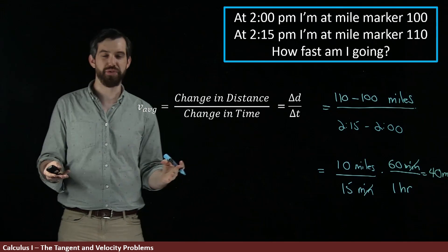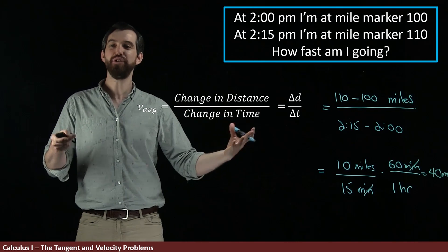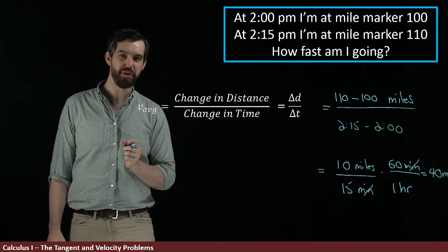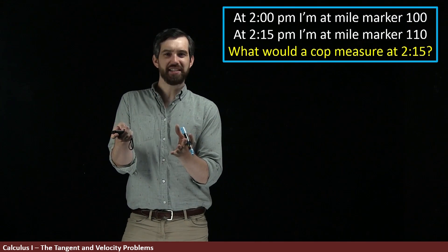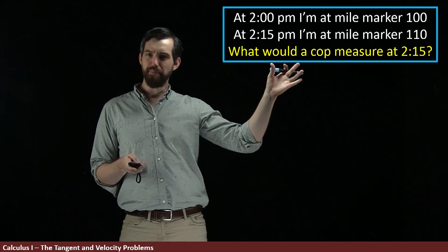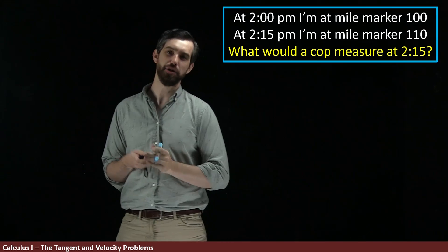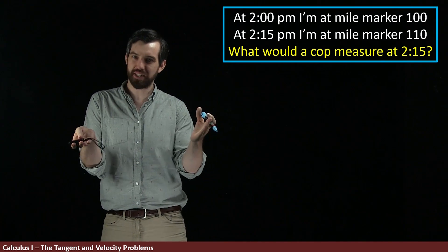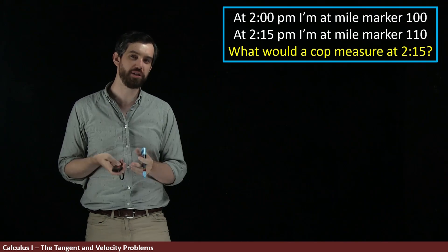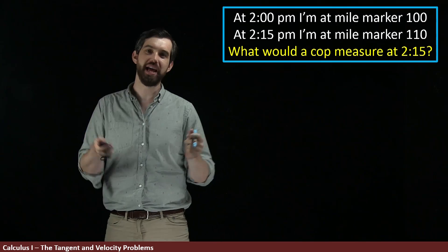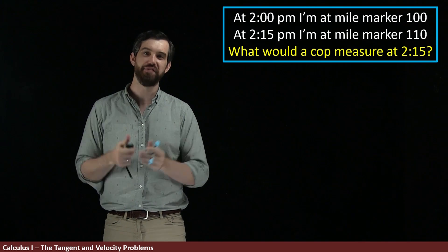So this is one way to answer this. This is the average velocity over this 15 minute time interval. Now I'm going to ask a slightly different question. It's what would a cop measure at exactly 2:15? We had previously decided that the average velocity over this 15 minutes was 40 miles per hour. So how do we answer the question, what is the cop going to tell us the velocity is at 2:15 exactly?